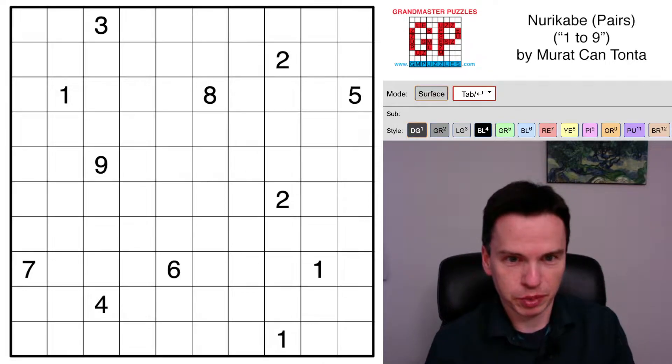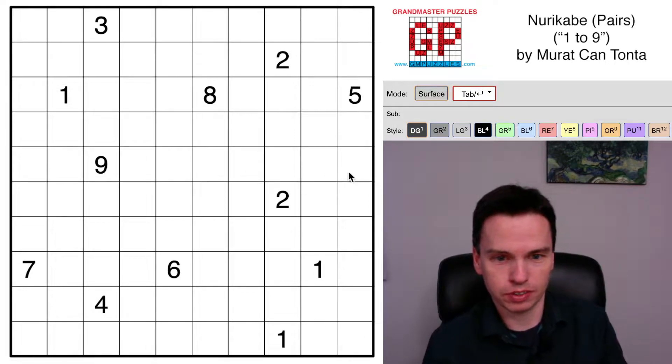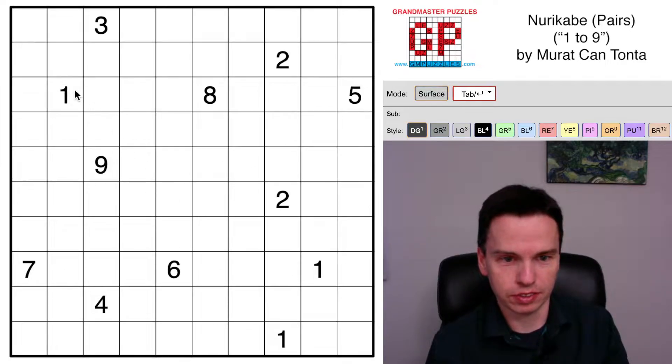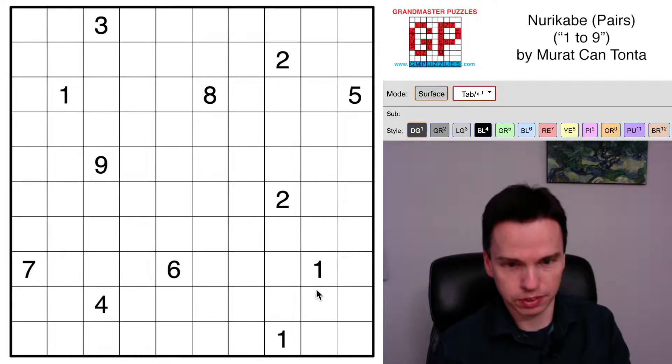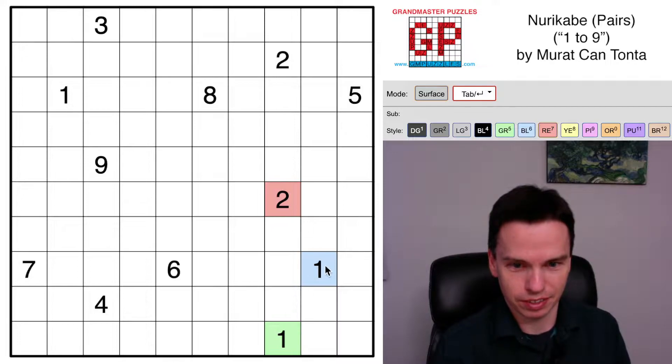So here's how to solve this Nurikabe pairs puzzle by Maratjantanta with the theme 1 to 9. All those clue values are in the grid, and in particular there are 3 ones and 2 twos, and that's pretty common in Nurikabe pairs puzzles where the earliest stages are often to identify some cells that can't be part of the same island, and this 1-1-2 in the lower right corner looks like a good set to color immediately.